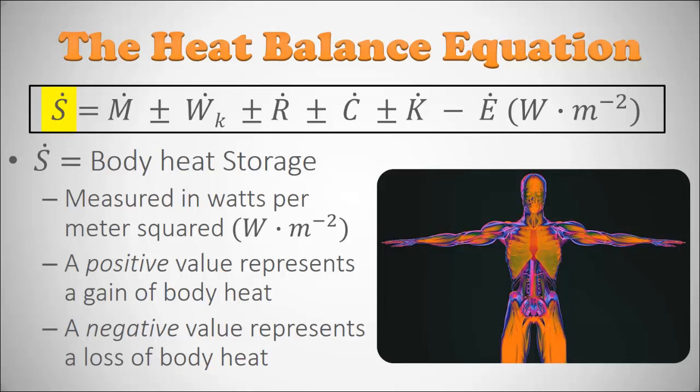Starting with the highlighted term S — body heat storage. It's the amount of heat stored in your body at any given moment, measured in watts per meter squared. It can be positive or negative. A positive value represents the body gaining heat, which can happen when you increase work or exercise. A negative value represents heat loss — say if you jump into cold water on a cold day, you'll rapidly lose body heat and that S value will be negative.